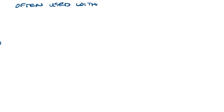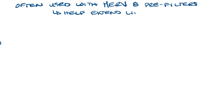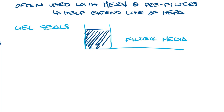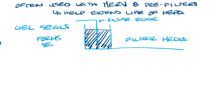HEPA filters are often used with a MERV 8 pre-filter to help extend the life of the more expensive HEPA filter. You will also see gel seals on these filters. The gel seal is a dark blue gel that goes around the edge of the filter, and a knife edge goes into the gel seal forming the seal, making sure no air will leak past the filter media.